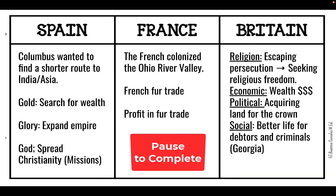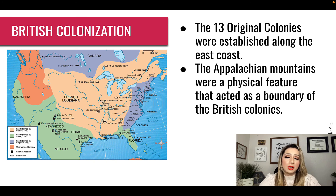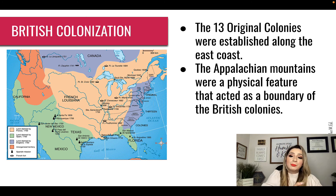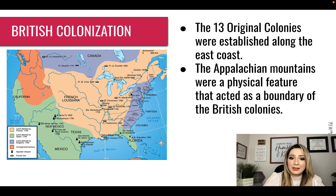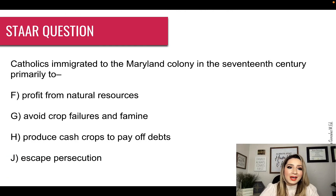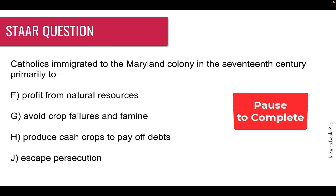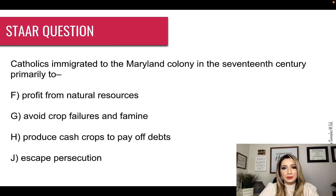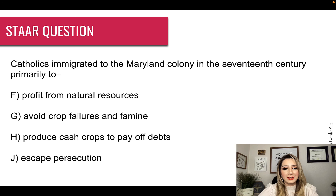The 13 colonies were established along the east coast of the Atlantic Ocean. The Appalachian Mountains were the physical feature that acted as a boundary for the British to expand west. All along this light purple area are the Appalachian Mountains, which made it difficult for the colonies to keep expanding west. Go ahead and color in your map. And our star question: Catholics immigrated to Maryland colony in the 17th century primarily to — you should have answered J, escape persecution, because as soon as you see a religious group, they were escaping persecution and seeking religious freedom.